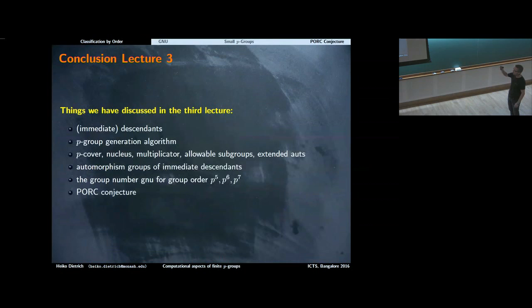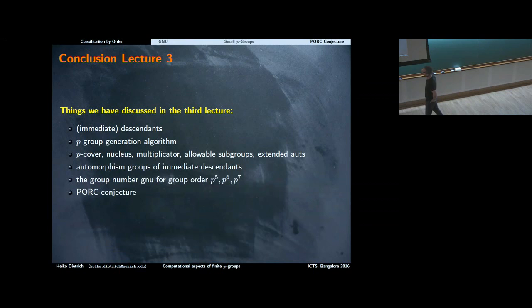To summarize today's lecture: we talked about descendants and immediate descendants, and discussed the p-group generation algorithm. In particular, we introduced the p-cover, nucleus, multiplicator, allowable subgroups, and extended automorphisms. We briefly discussed automorphism groups of immediate descendants, and finally the group number function gnu and the PORC conjecture. Thank you.